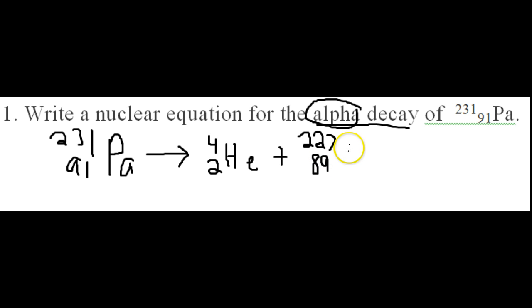And then using your periodic table to find your daughter atom, which in this case is actinium.